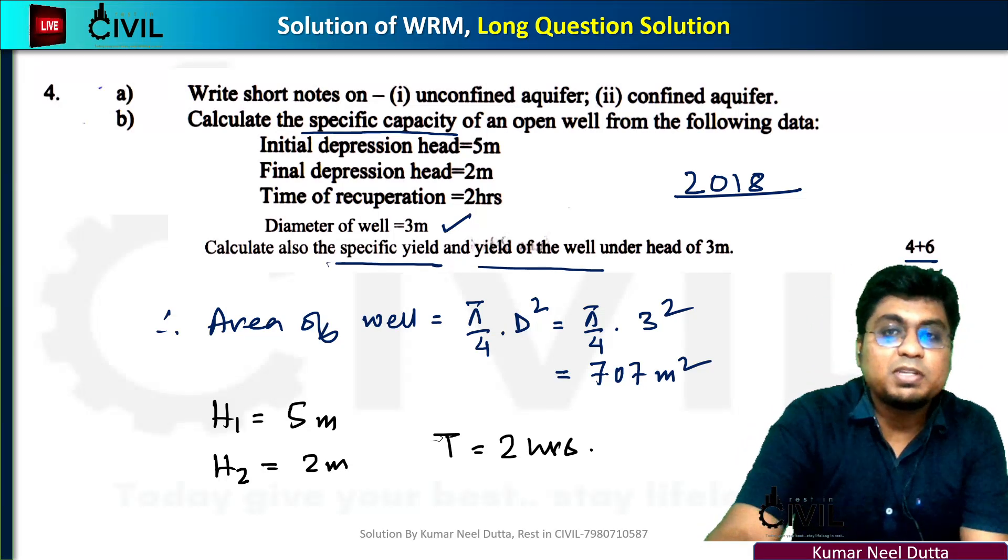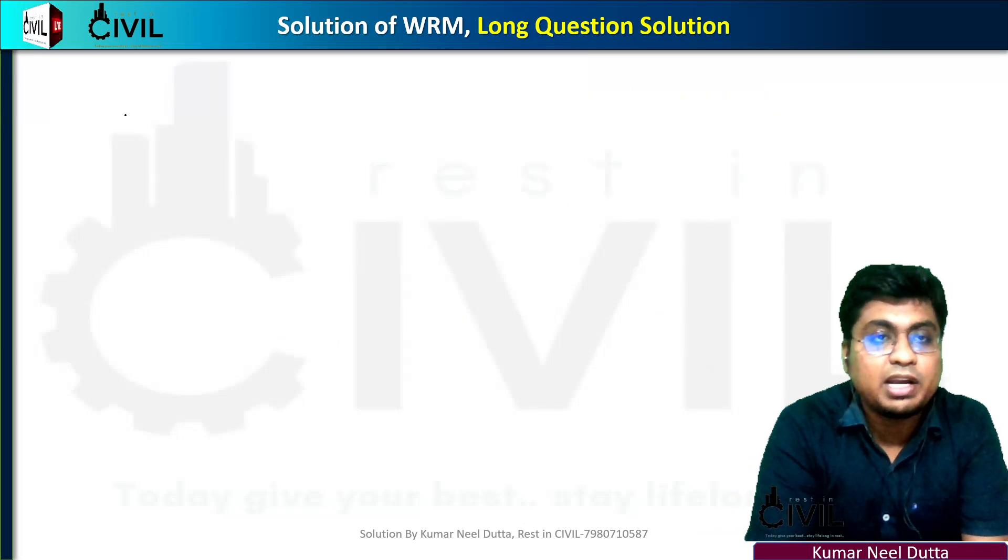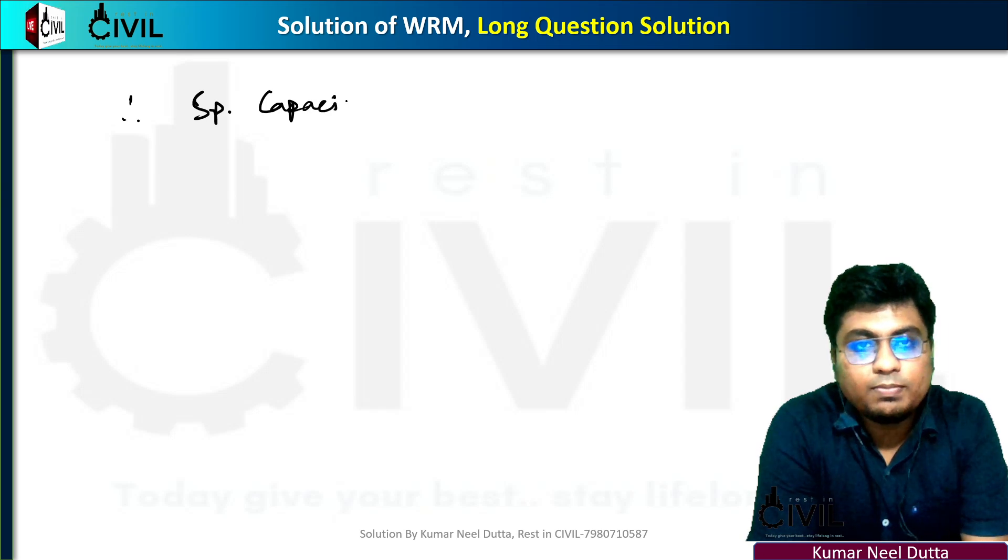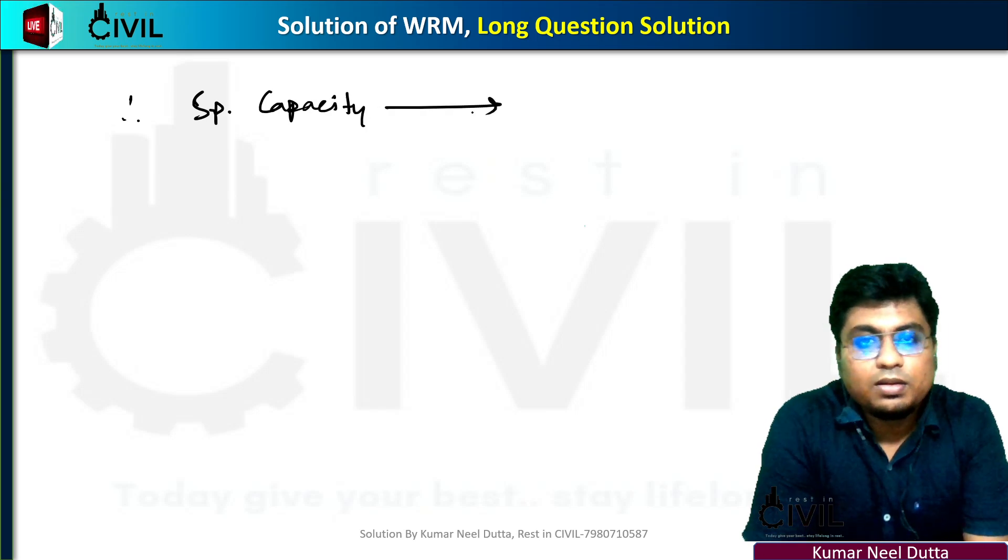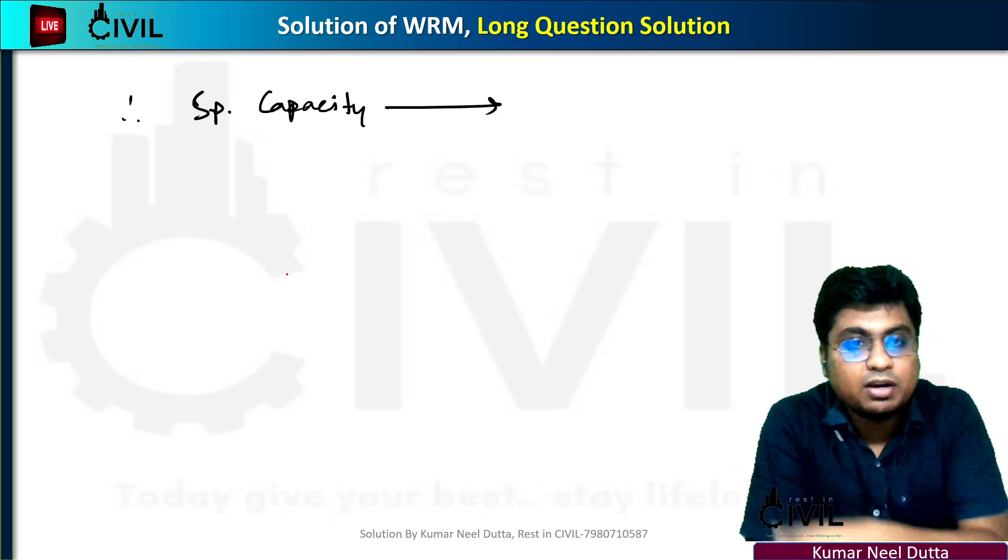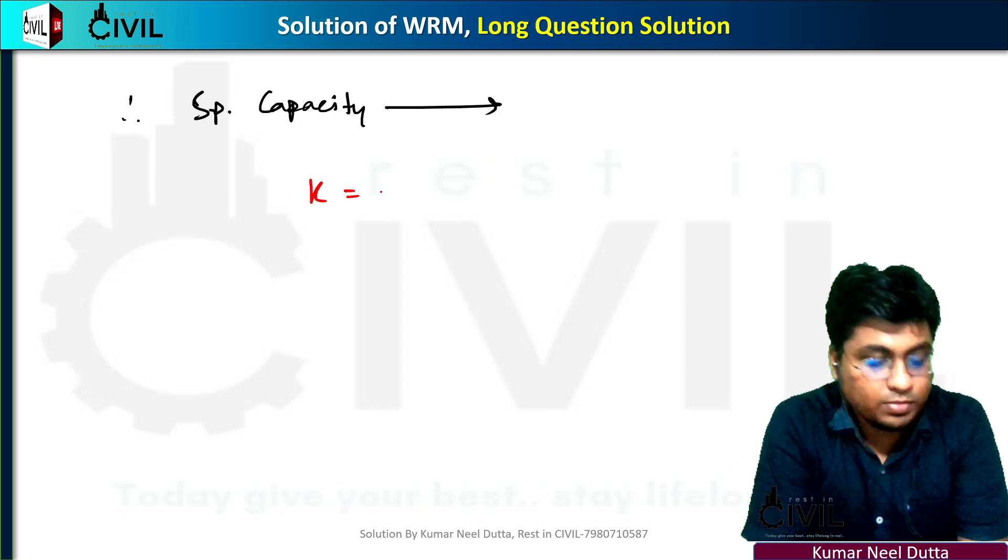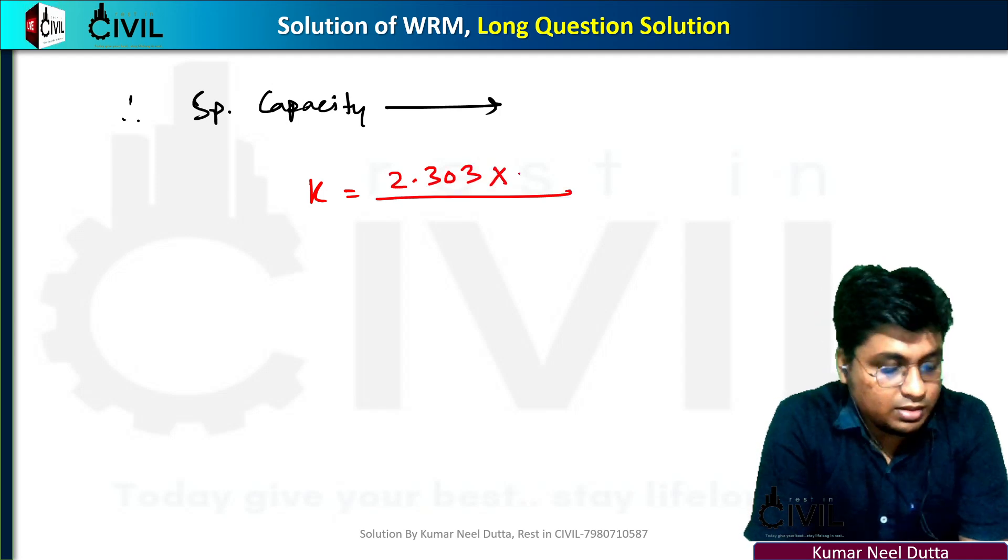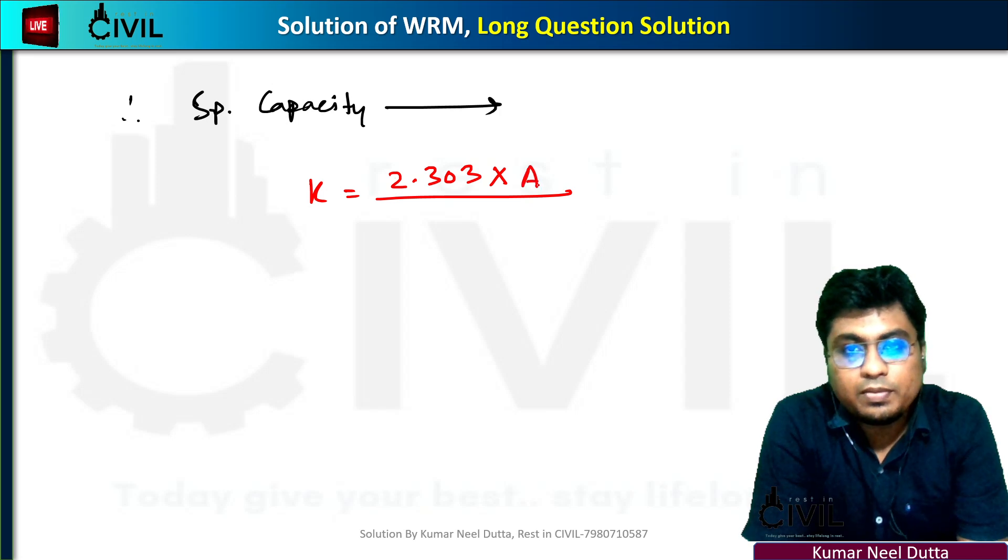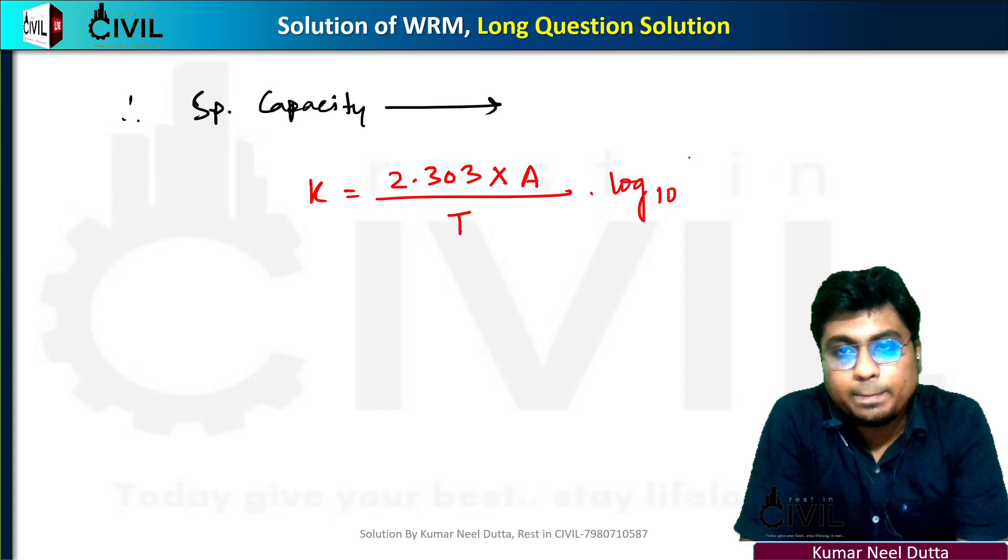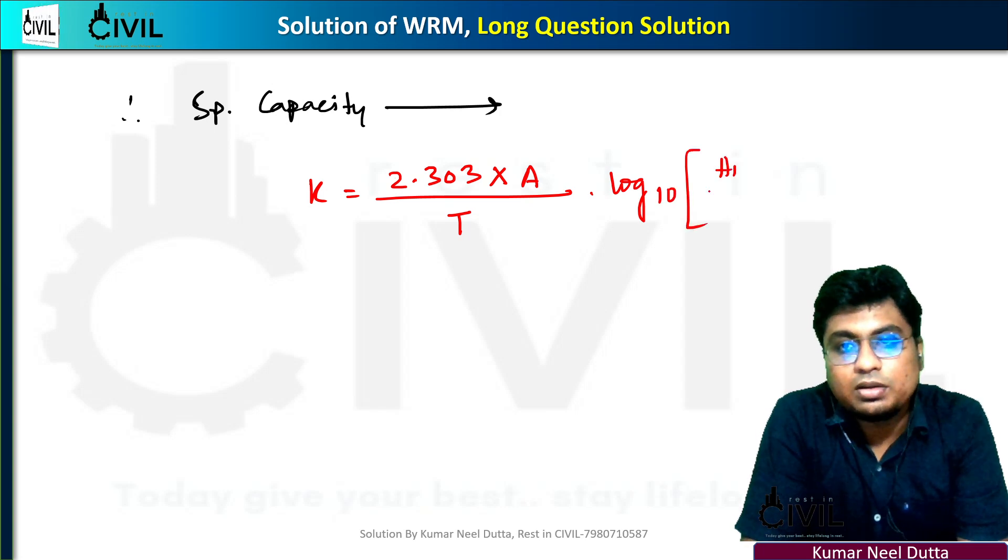The formula for specific capacity is K equals 2.303 times A by T times log base 10 of H1 by H2.